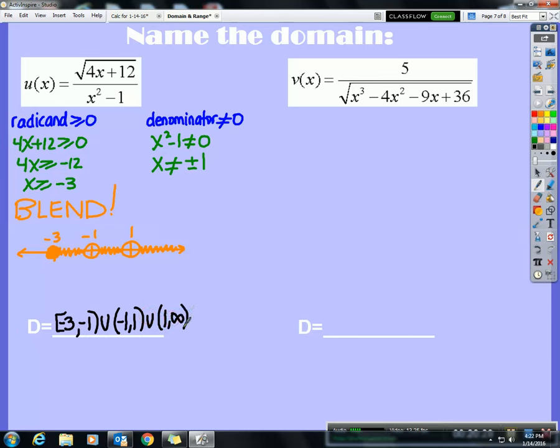Now on v of x, you've again got a radical that's even, so you need to say that the radicand, what's under the radical, cannot be negative. But then when you say the denominator cannot be 0, well remember guys, if you take the square root of 0, you get 0. So now I'm going to say if I put these together, then what I'm saying is that my radicand can only be positive because if it's 0, then the whole bottom is 0, and I can't allow the bottom to be 0. So now I'm ready algebraically to say this means that x cubed minus 4x squared minus 9x plus 36 has to be greater than 0.